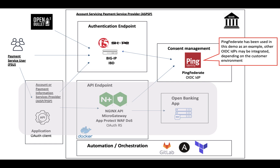The use case is somewhat simpler as we don't expect good bots to access this page, so the bot management function is simplified — we are interested in allowing only humans to access it and blocking everything else. One solution would be to leverage on-premises BIG-IP devices and use Shape's first-party, self-service offering: Integrated Bot Defense (IBD).